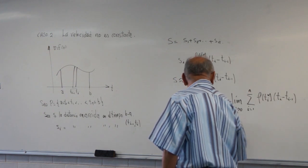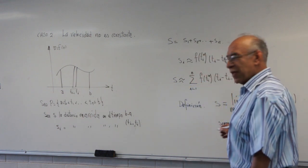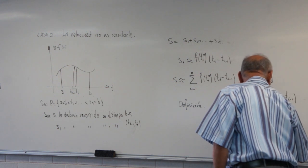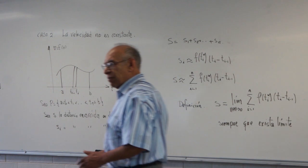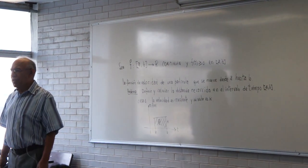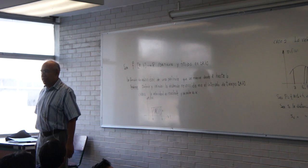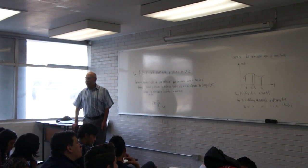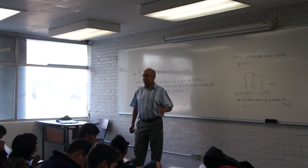Si quiero calcular la distancia recorrida por una partícula cuya velocidad se me ha dado, simplemente debo calcular el límite de una suma de Riemann cuando la norma de la partición tiende a cero. Y desde el punto de vista geométrico, eso es el área bajo la función. Cuando les digan que calculen la distancia recorrida, van a calcular el área bajo la gráfica de la función, aunque les pregunten distancia y no área.